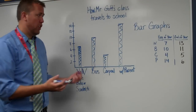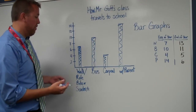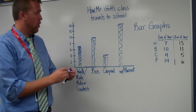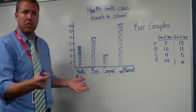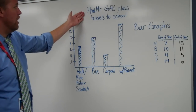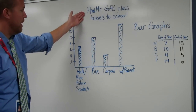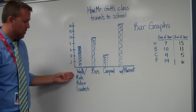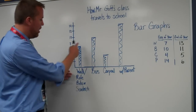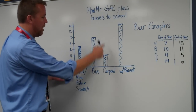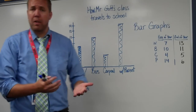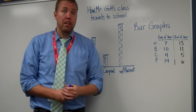Now I have data that is shown in a graph. If anybody walked in and didn't know what we were doing, they could look — they see the title, 'How Mr. Goff's Class Travels to School.' They would see how they traveled to school and how many traveled there. That's a regular bar graph.